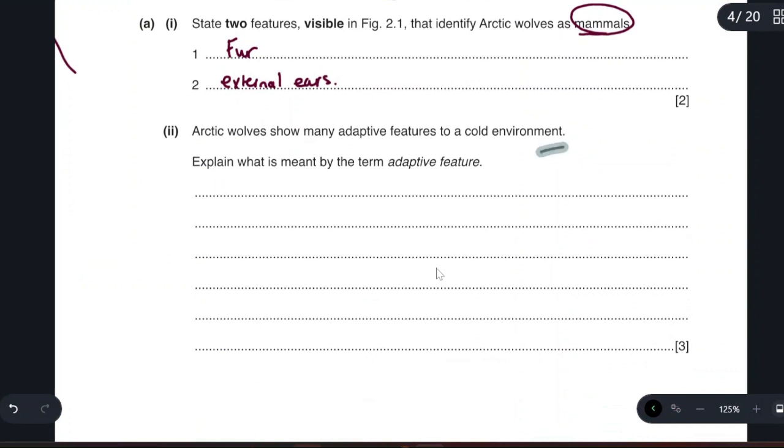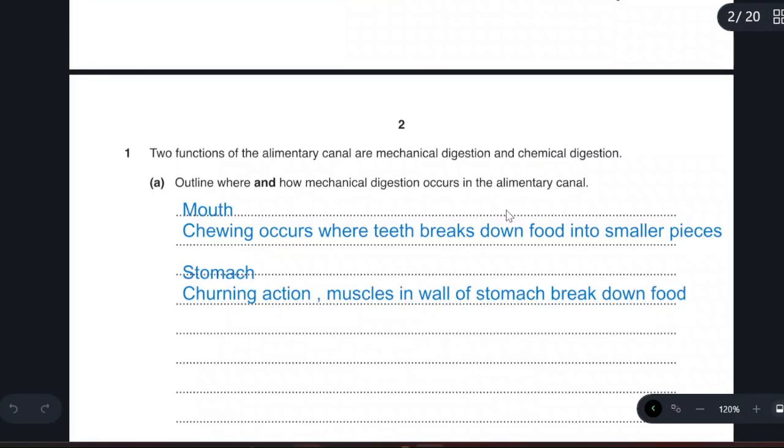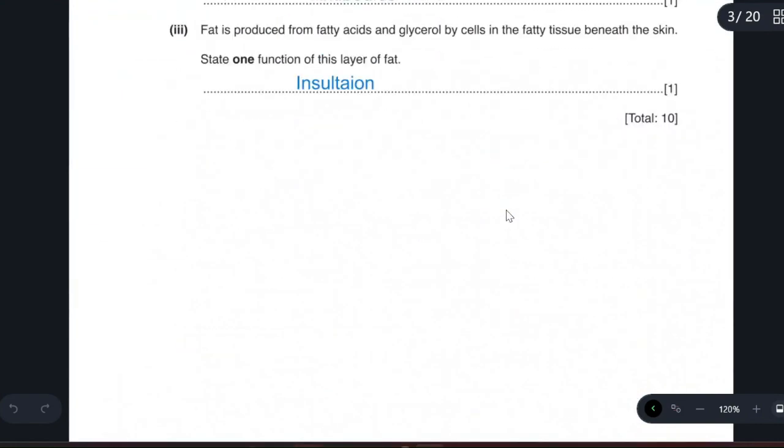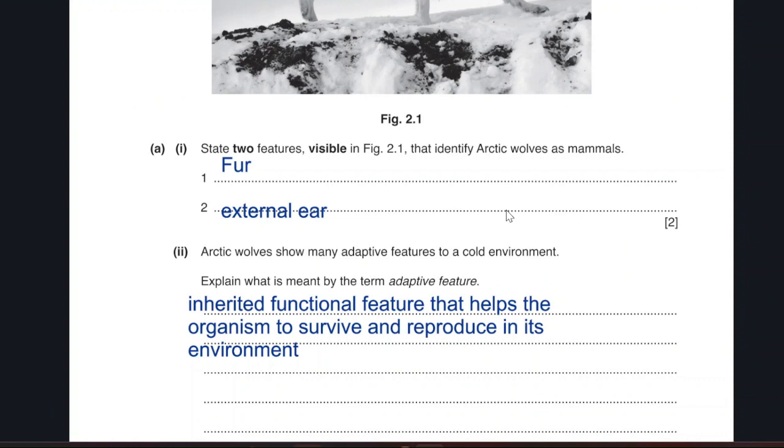Arctic wolves show many adaptive features. What is meant by the term adaptive feature? Inherited. It is an inherited functional feature that helps the organisms to survive and reproduce in its environment. Inherited feature helps them to survive and reproduce in the environment.